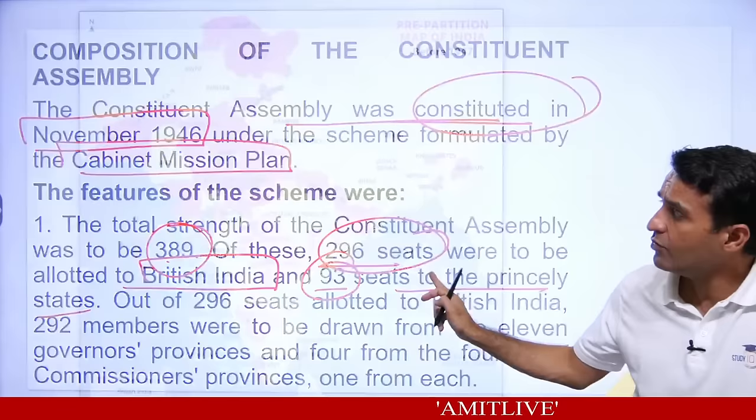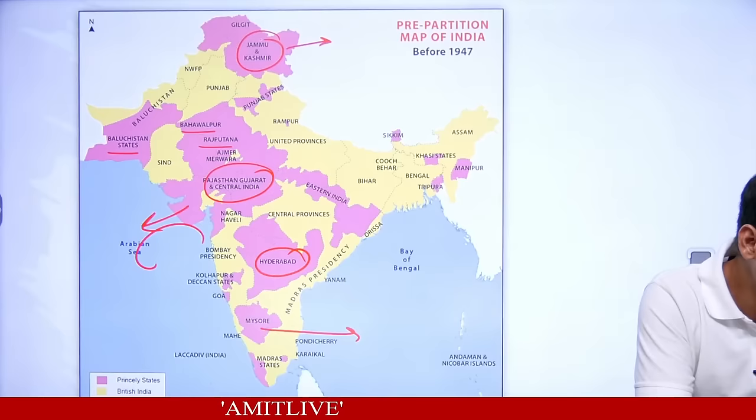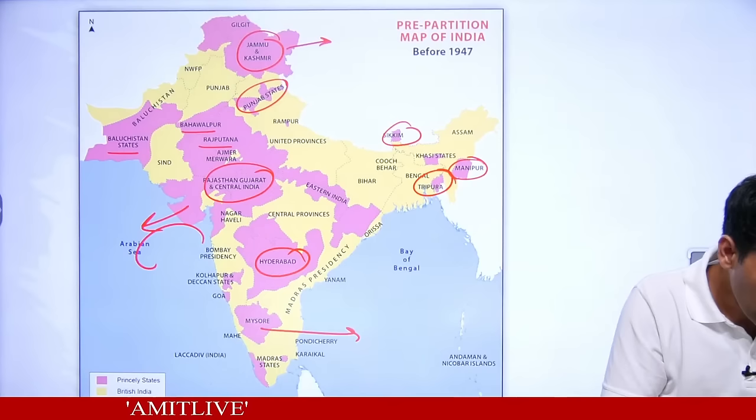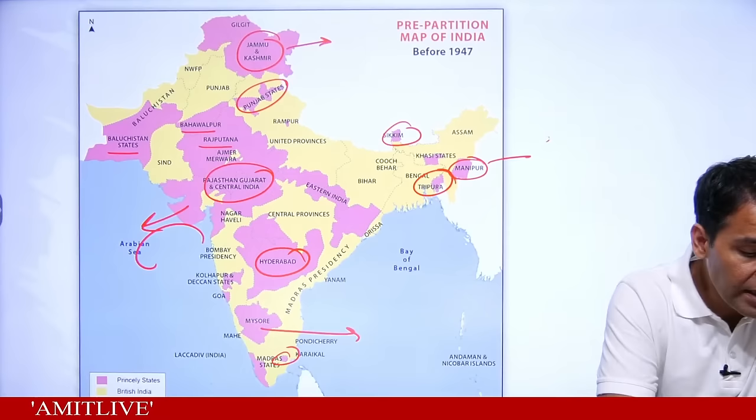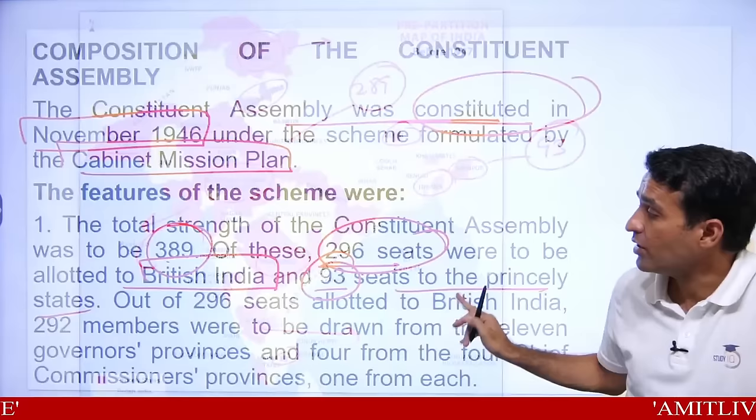The pink areas — all princely states like Mysore, Hyderabad, Rajasthan, Gujarat, Central India, Rajputana, Bhawalpur, Balochistan states, Jammu and Kashmir, Punjab states, Manipur, Sikkim, Tripura, Madras states — from here 93 people were to be chosen. From the yellow British Indian provinces, 296 people were to be elected.